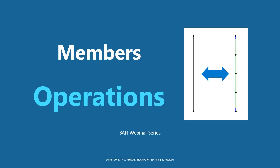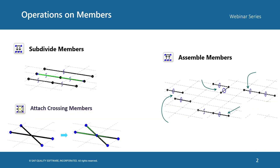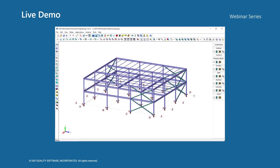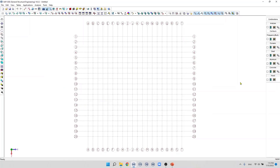Hi everyone and welcome to another video of the SAFI webinar series. In this video we're going to learn about some operations that we can do on members. After adding members to the model, the user can do many operations including subdividing members, assembling members, and attaching crossing members. Without further ado, let's start our demo.